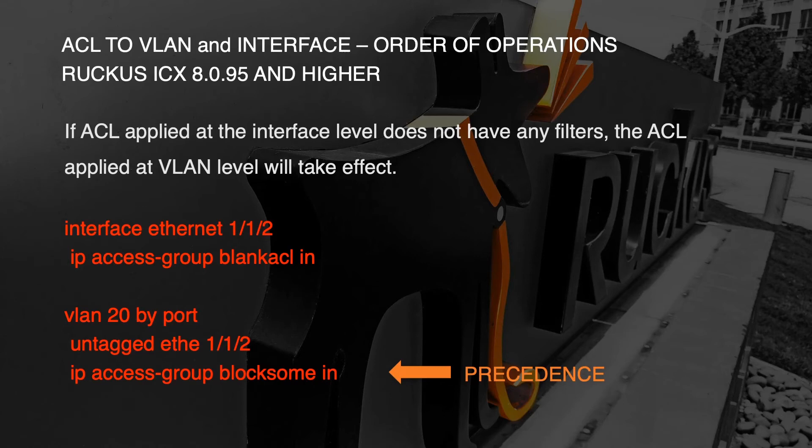If the ACL applied at the interface level does not have any filters — so if it's a blank ACL — then the one at the VLAN level takes effect. I called this 'blank ACL in', basically just to illustrate that if there's nothing in that ACL, then the VLAN one takes precedence and will take effect.